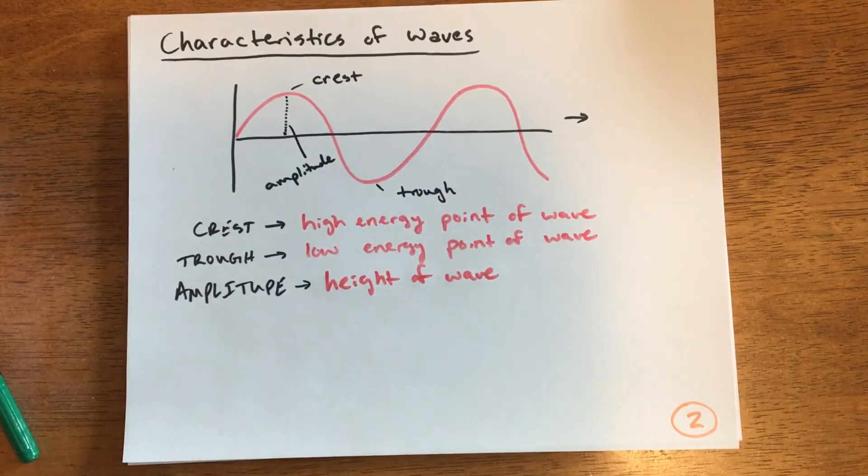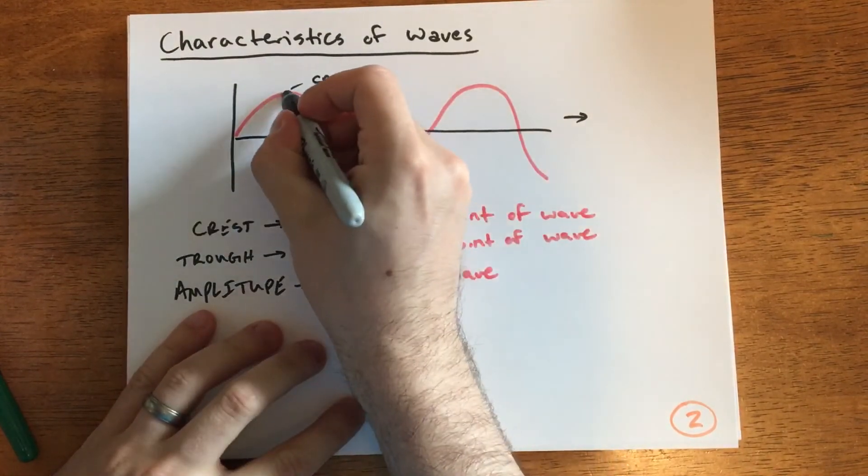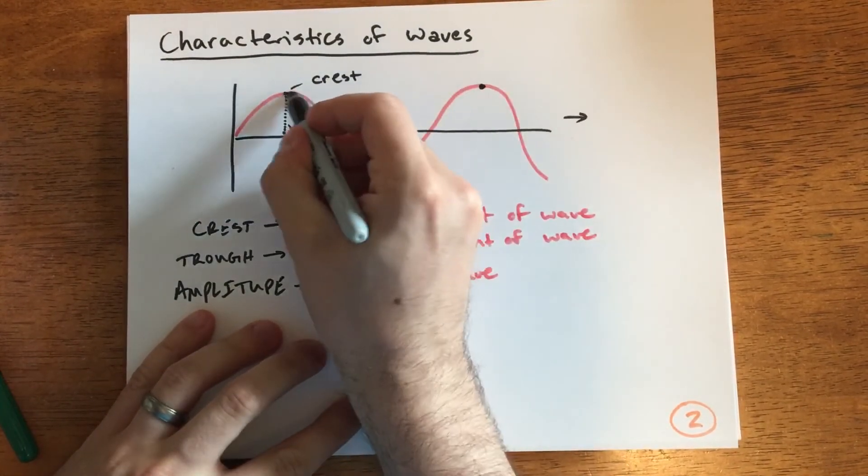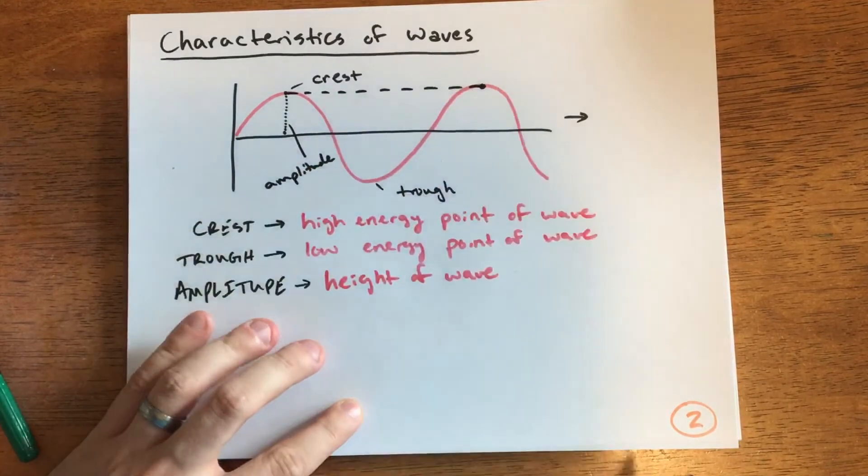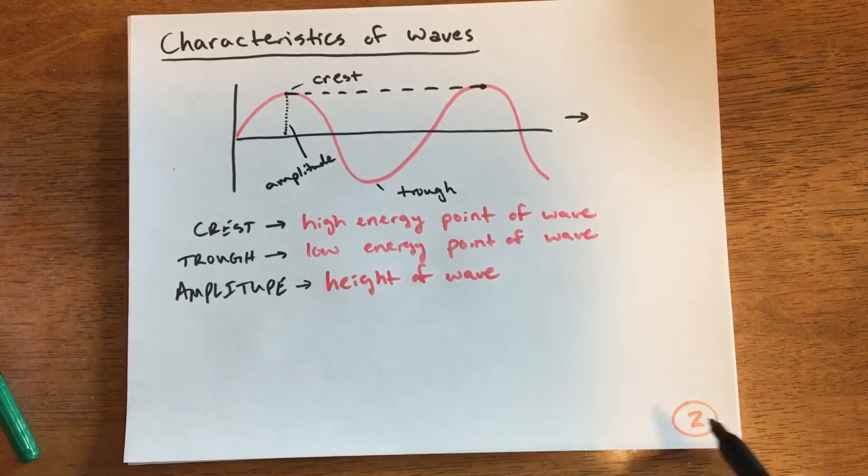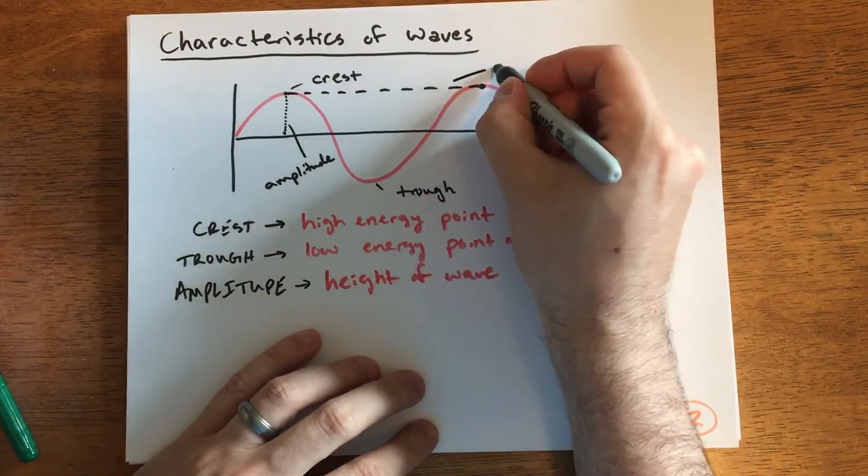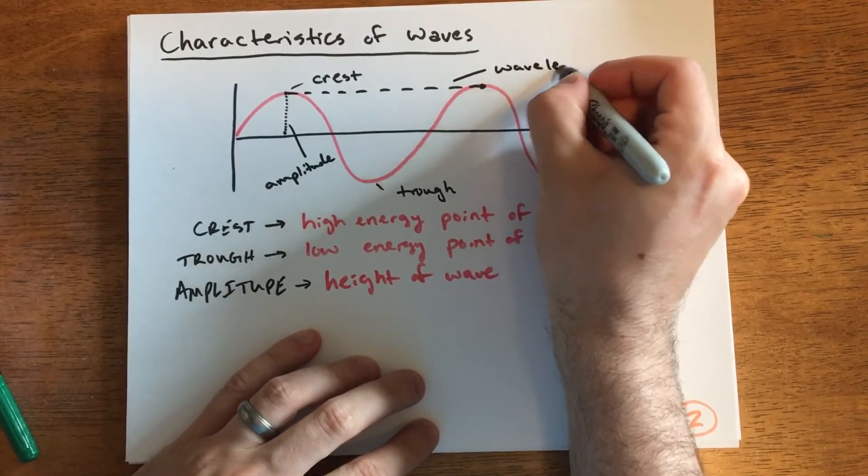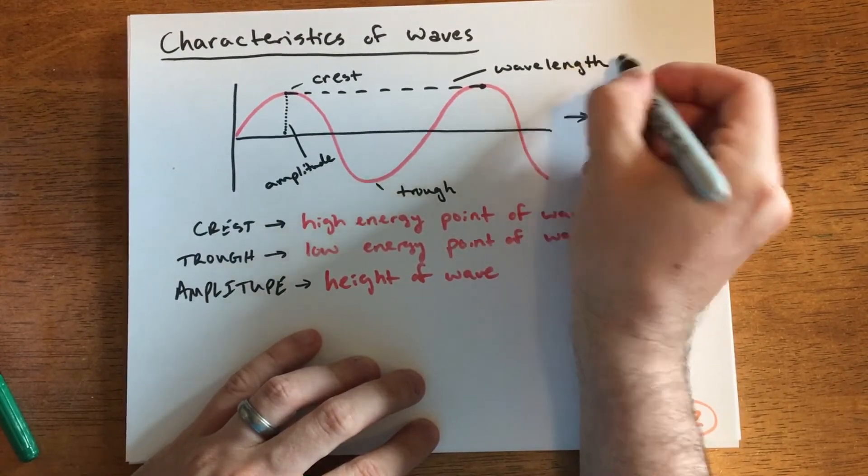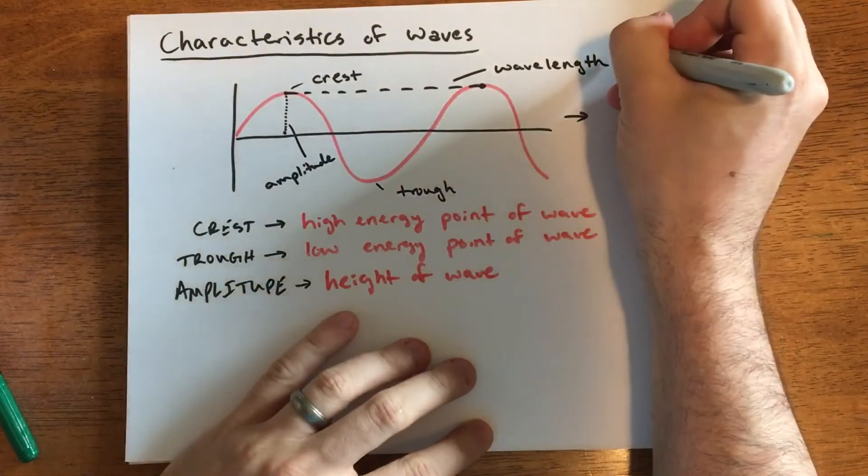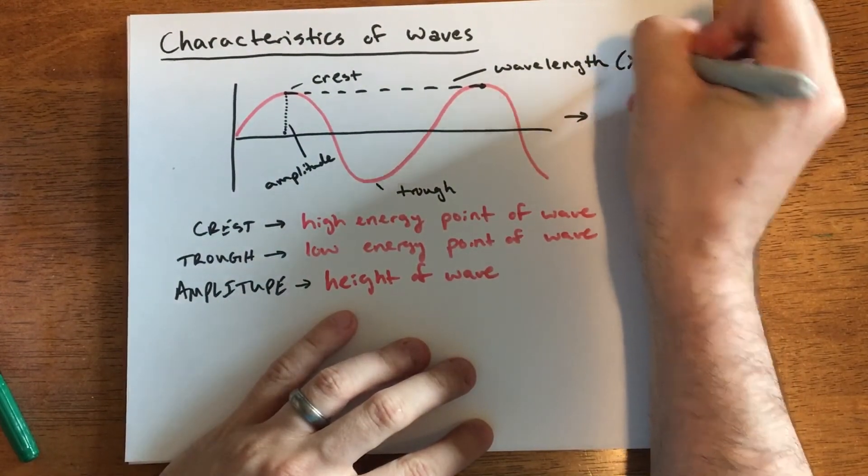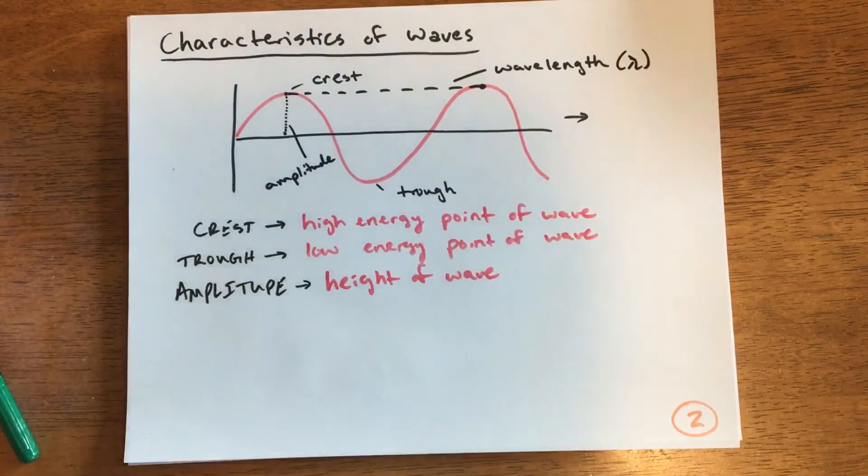Last two important things. We need to talk about how wide or long the wave is—from point to point, where we've moved to an analogous point on the wave because it's a repeating structure. This is called the wavelength. Wavelength has a particular symbol, the Greek letter lambda. Amplitude is typically just A.